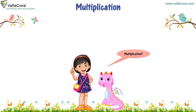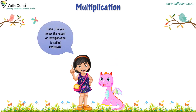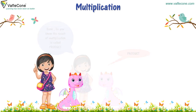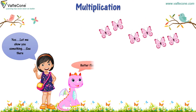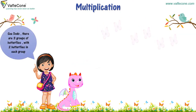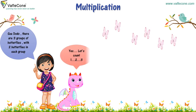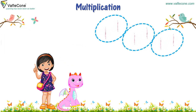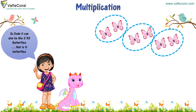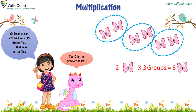Multiplication? Yes, Dodu, the repeated addition is called multiplication. Do you know the result of multiplication is called product? Product? Yes, let me show you something. See there — butterflies! See, Dodu, there are 3 groups of butterflies with 2 butterflies in each group. Let's count: 1, 2, 3. So, Dodu, it can also be like 2 into 3 butterflies — that is 6 butterflies. Yes, 6 is the product of 2 into 3.